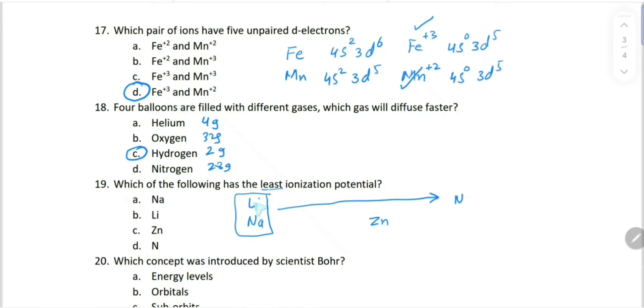They are members of the same group. Down the group, ionization energy decreases. So the least ionization energy will be for sodium.